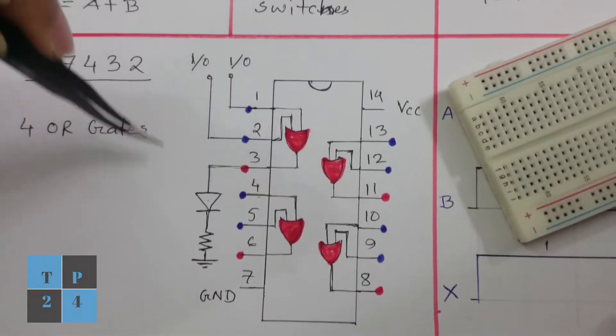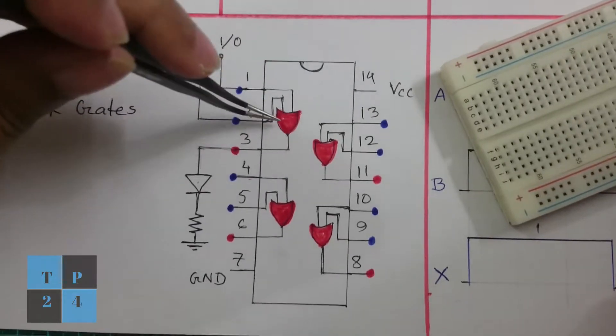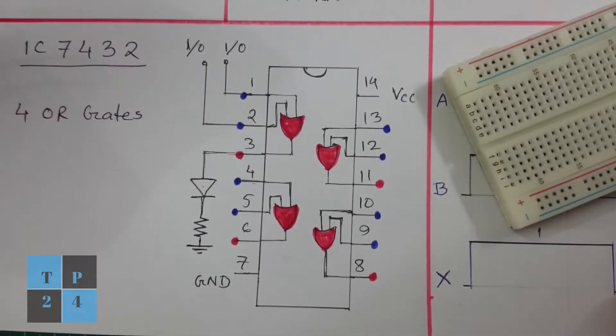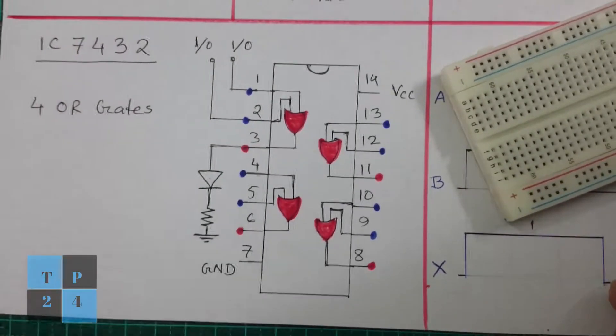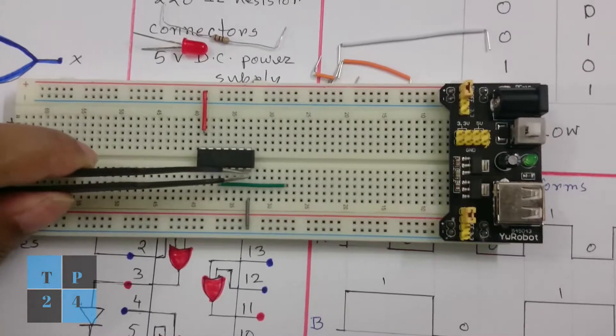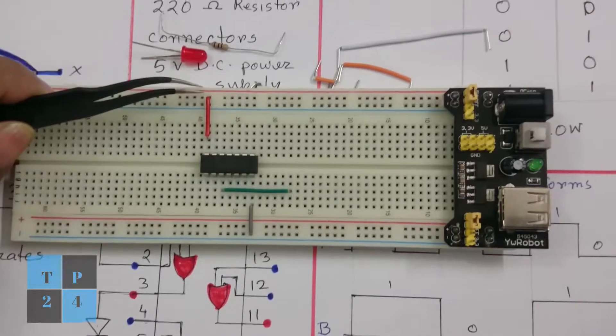Now I am going to explain the OR gate operation by using this single OR gate in this IC. So let us jump to our work. Here I put the IC and I connected pin number 7 to the ground and pin number 14 to the positive rail.